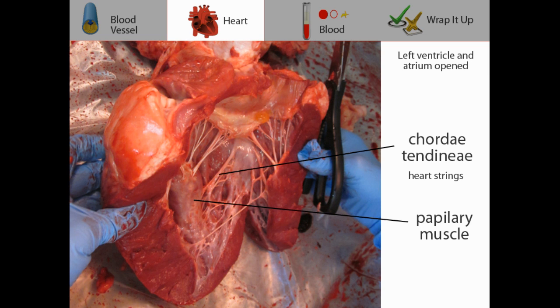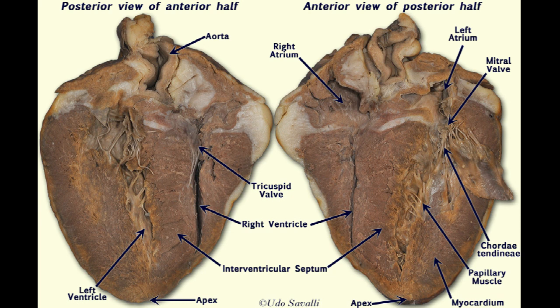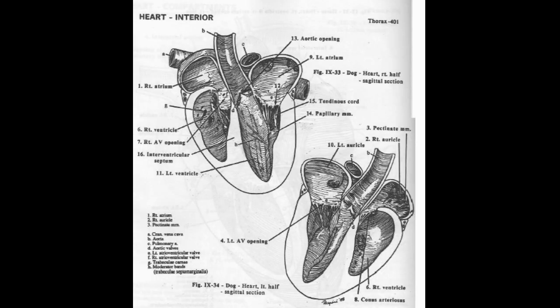The tricuspid valve cusps are attached to the papillary muscles of the heart by fibrous cords called chordae tendineae. When blood is pumped from the left atrium to the left ventricle, its flow is guarded by the left atrioventricular valve, also known as the bicuspid valve.